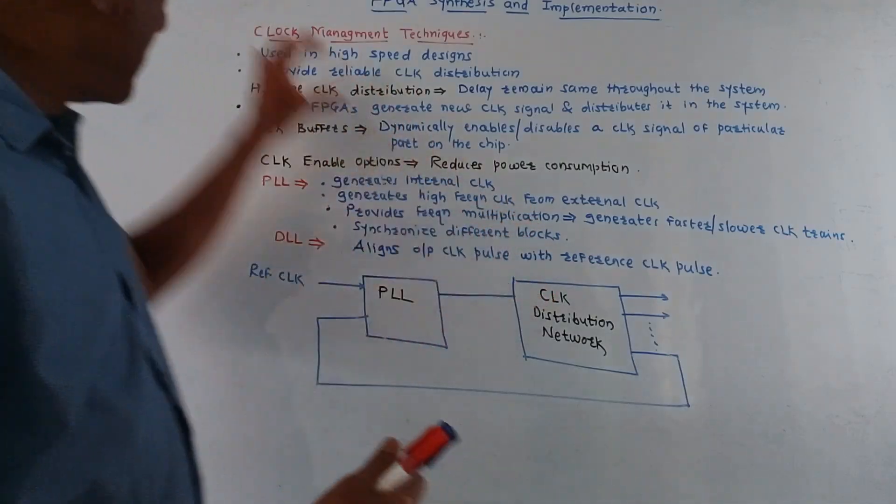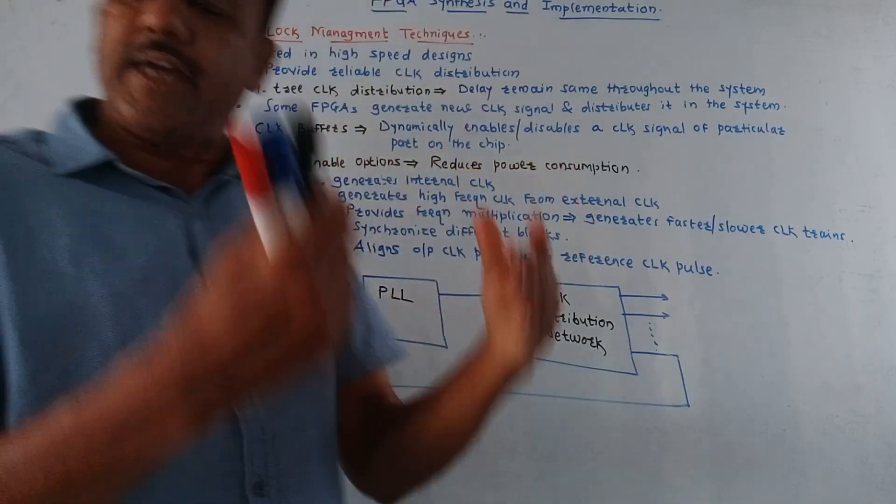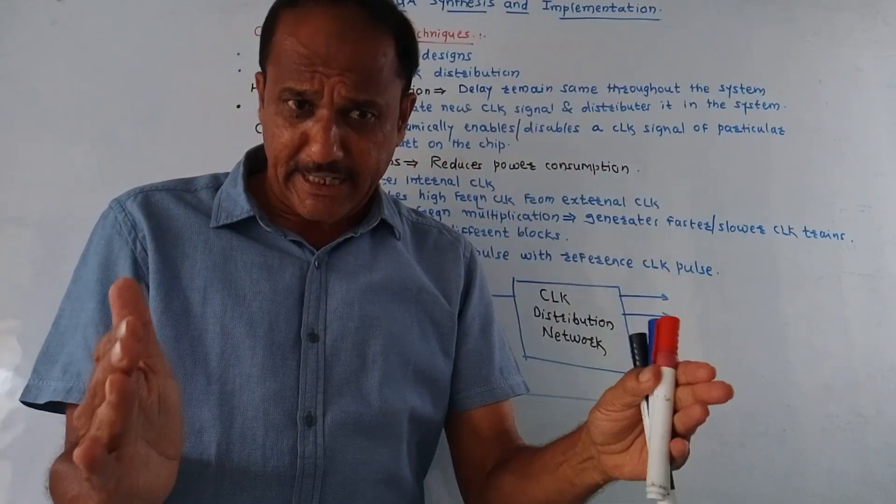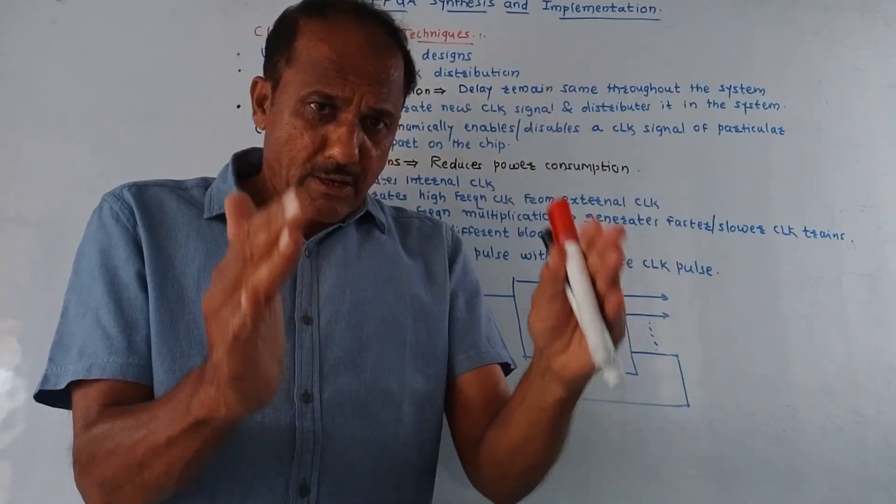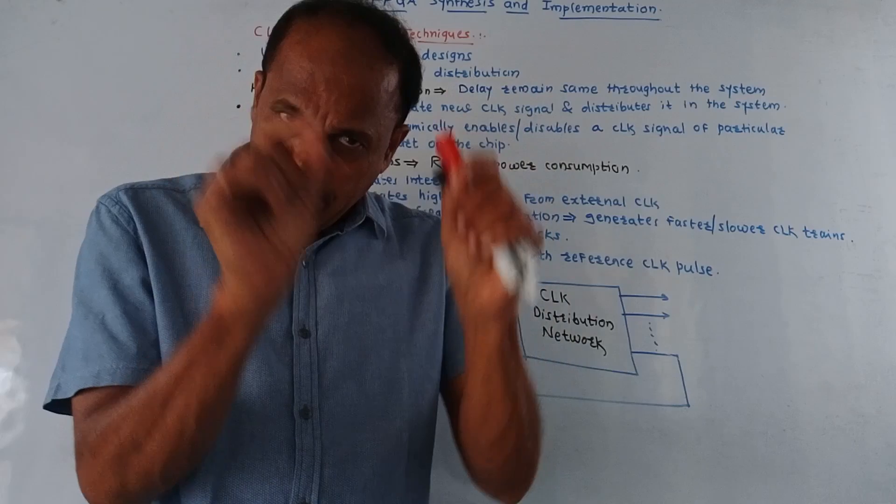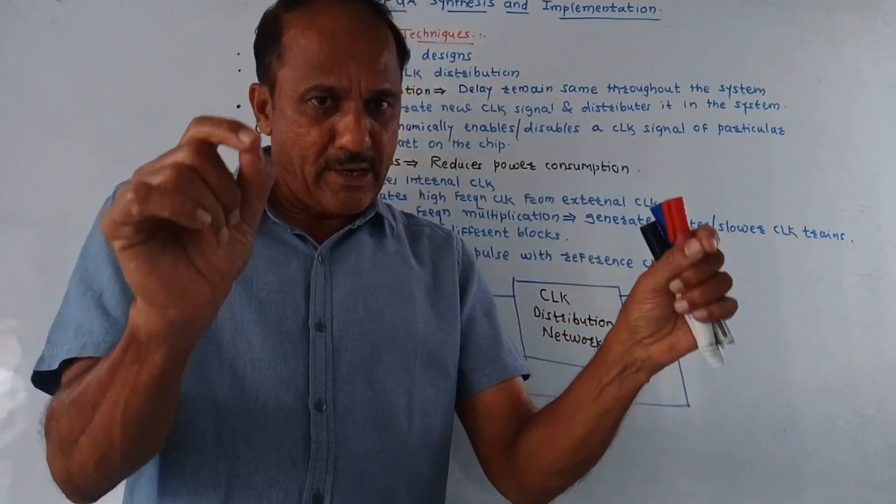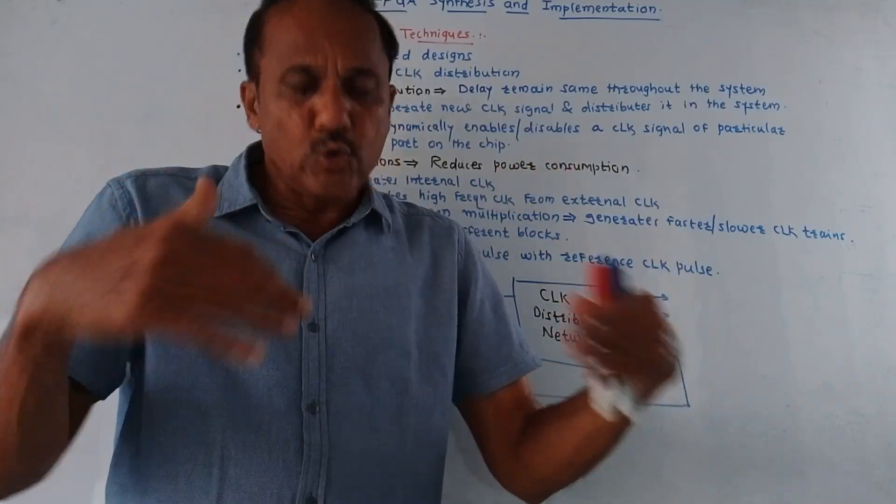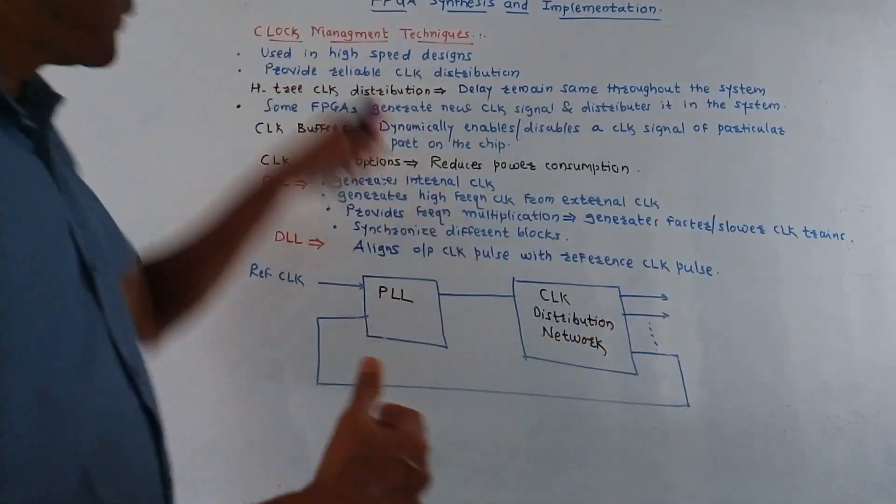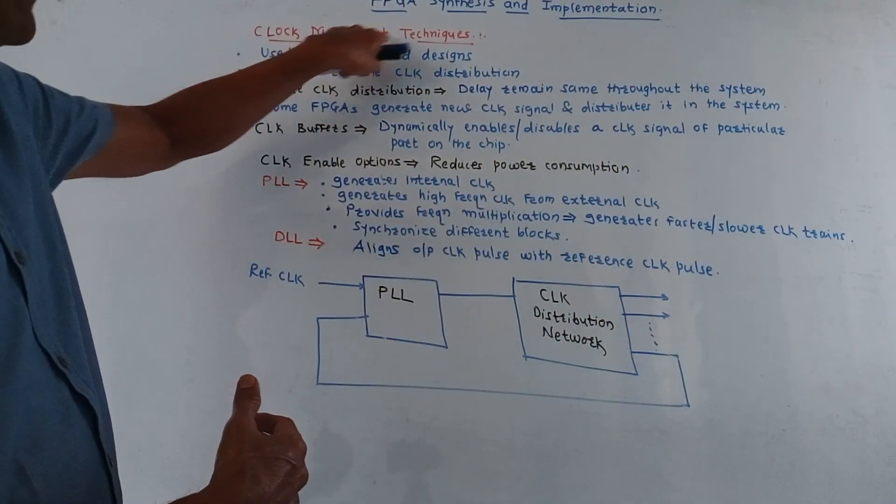Before that we'll discuss the clock management techniques used in FPGA. As the name indicates there should be a proper clock management. That means the distribution of the clock signal should be proper or let us say equal to all parts of the circuit. So that is done by using clock management techniques.